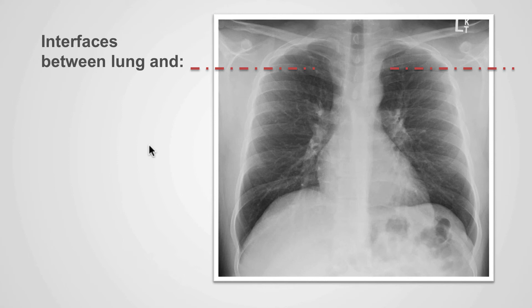So let's now practice identifying the interfaces created between the lung and the other anatomical structures. Along this line, we can identify various interfaces. Can you identify what is causing this border? The answer is the superior vena cava.